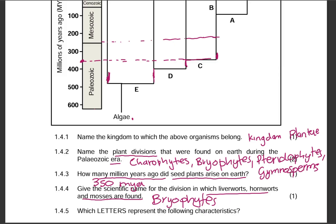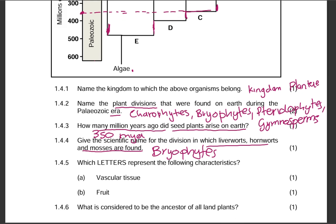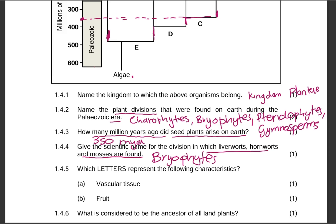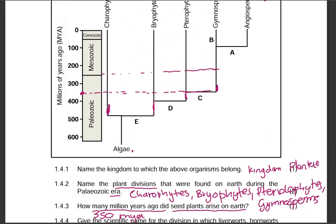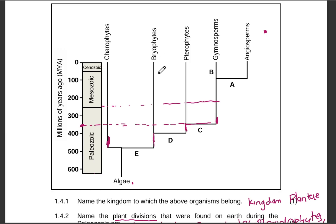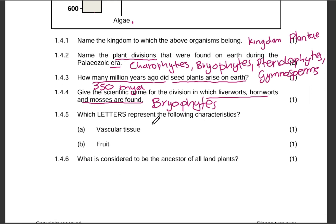Which letters represent the following characteristics — vascular tissue and a fruit? Vascular tissue was introduced after Bryophytes, so the trait introduced just after Bryophytes is vascular tissue. A fruit is introduced just after Gymnosperms, so the answers are D and A.